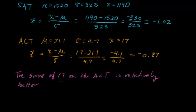Because while both scores are below their respective means, the ACT score is not as far below as the SAT score. The SAT score drops down a little more than one standard deviation, while the ACT score is not quite to one standard deviation. So when you're below the mean, we see that this ACT score would be relatively better. Its value is higher: negative 0.87 is a larger number than negative 1.02.